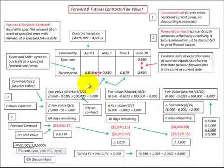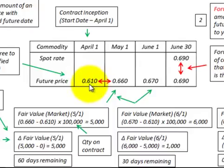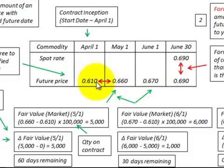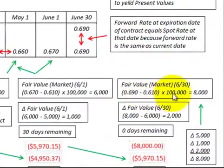Going through an example: for the May 1st period, we take the forward rate of 0.660 and compare it to the contracted rate of 0.610 at the start date. The difference times our quantity gives a $5,000 increase. For June 1st, the forward rate of 0.670 compared to the contracted rate of 0.610 gives a $6,000 increase. For June 30th, the forward rate of 0.690 compared to 0.610 gives an $8,000 increase in fair market value.